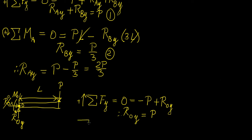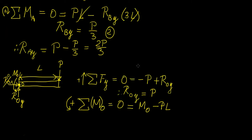The next one is the sum of the moments about point O, which equals zero. Let's choose anti-clockwise as positive. We have the moment at O minus P times L. So the bending moment reaction is going to equal P·L. And that's it. We have our two answers there.